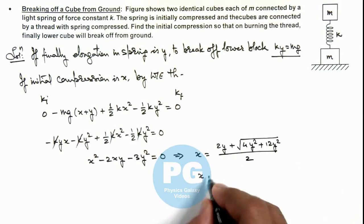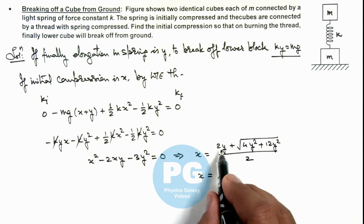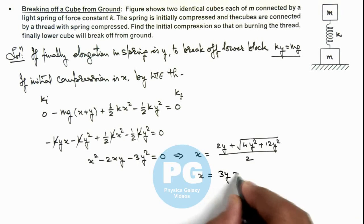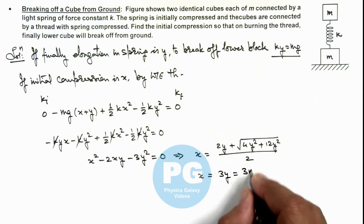So the value of x we are getting is, this will be y plus this will be 2y, so this is 3y. And the value of y is mg/k, so this can be written as 3mg/k.